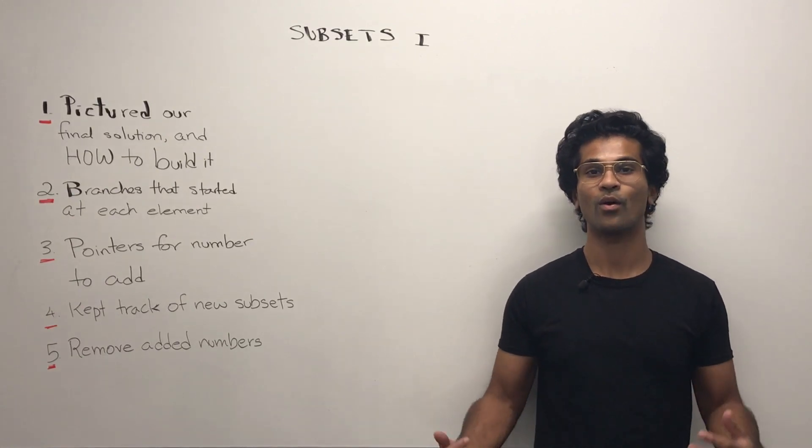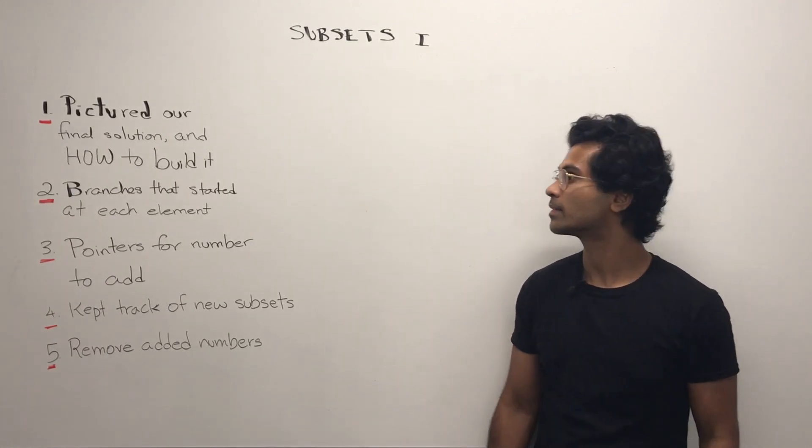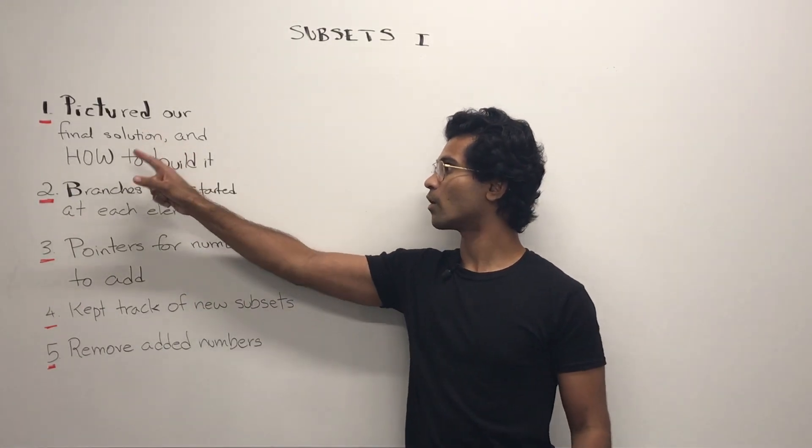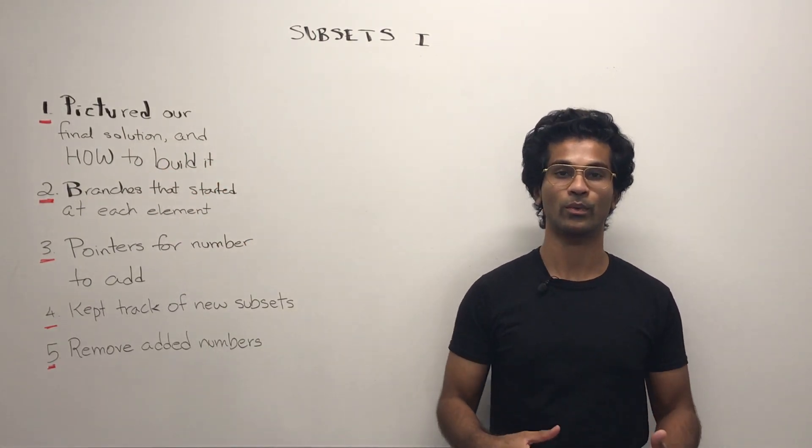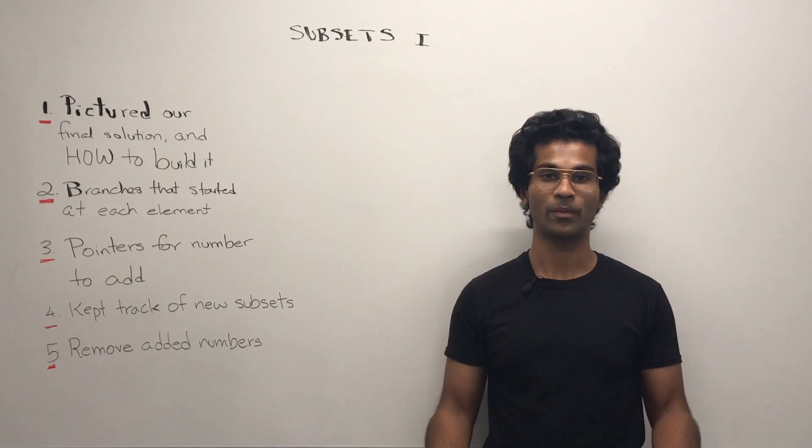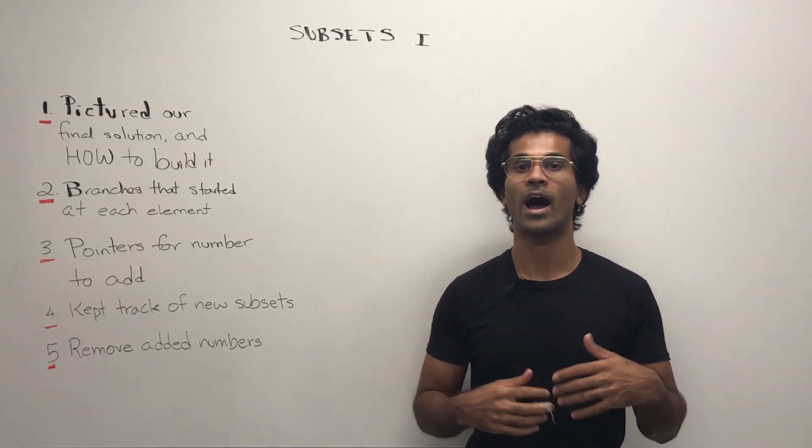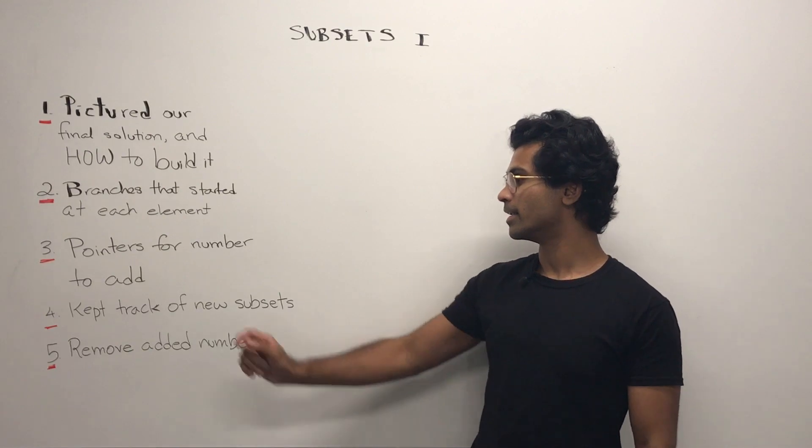Let's articulate what we just worked through. First, we pictured our final solution and how to build it. So we didn't go along with what the output was in the example. But we thought about how we're going to build our solution.